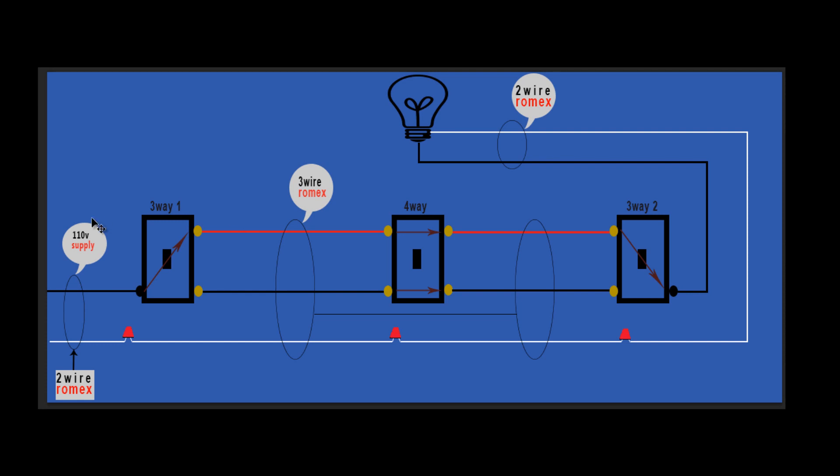So each box has two cables coming in. The first box has the supply cable, which is a two-conductor Romex. Leaving that box and going to the box that contains the four-way switch is a three-conductor Romex cable. And leaving the box that has the four-way switch in it, we have a second three-conductor cable that travels to the last box, which has a three-way switch in it. And in that box, we're going to have that cable coming from the box containing the four-way, and we're also going to have another two-conductor Romex in that box that's going up to the light.